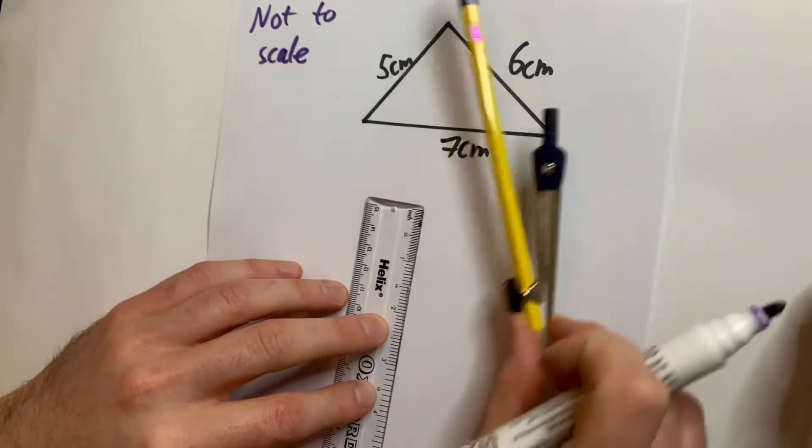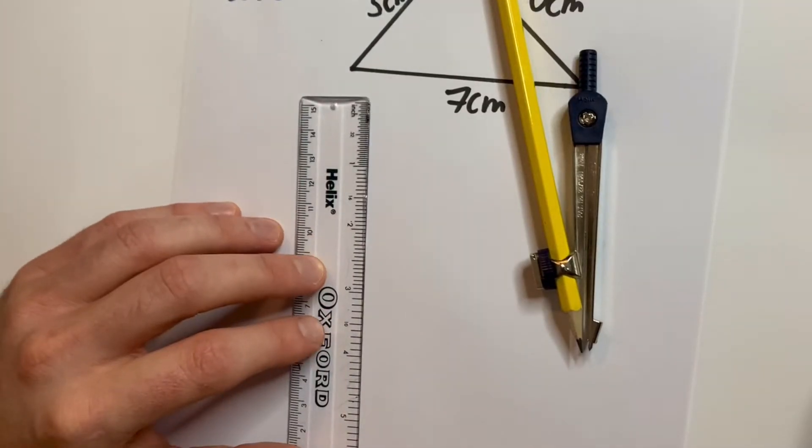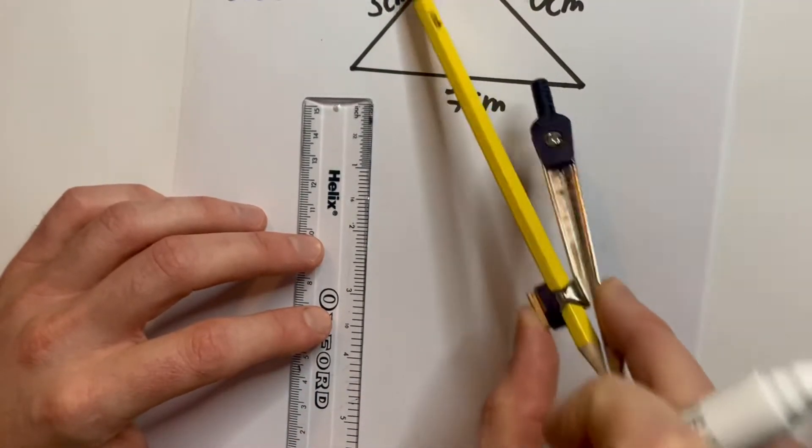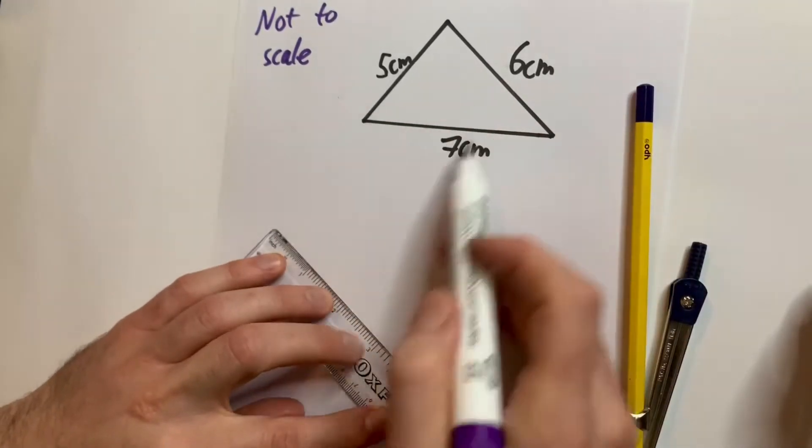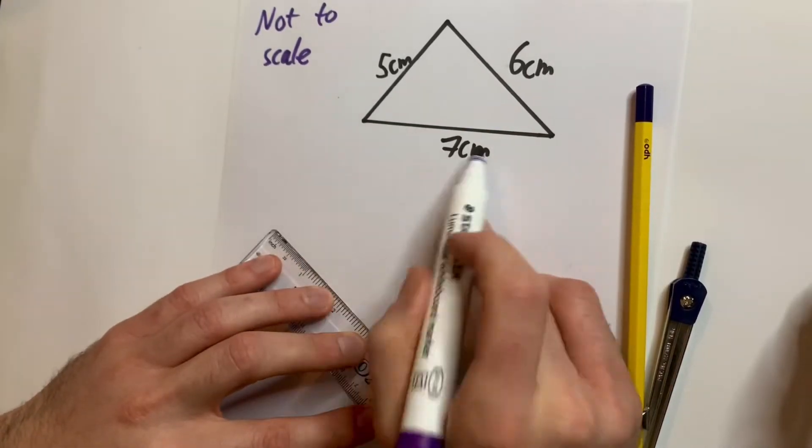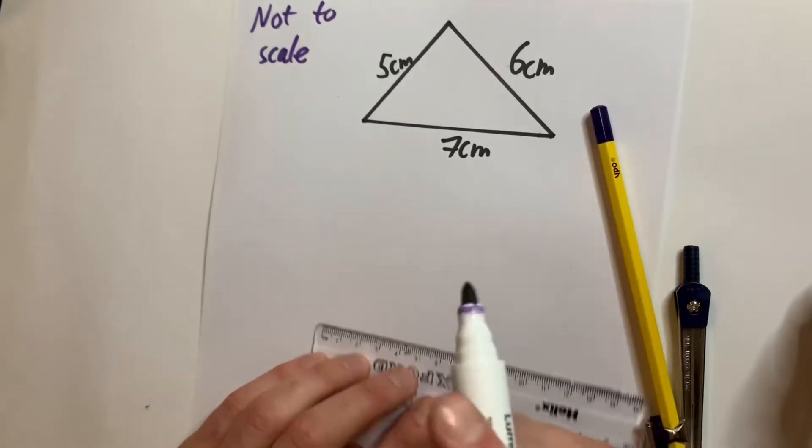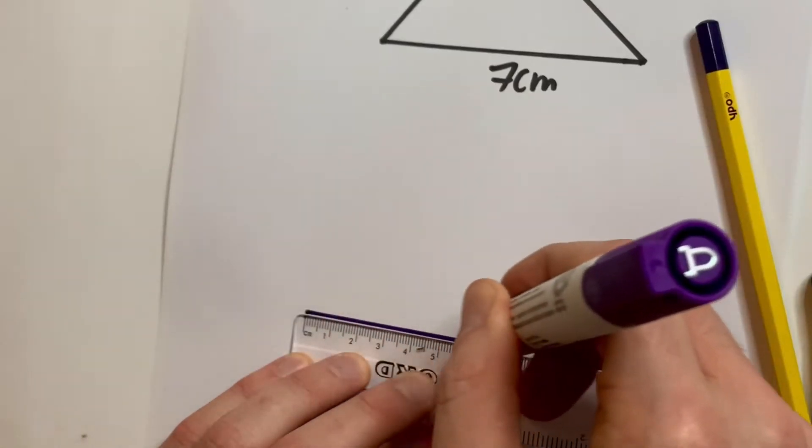We're going to use a compass and a ruler. Really important, we need this compass to make sure it's accurate. So this one here is not drawn to scale, seven centimeters. We need our ruler, nice and easy to draw our seven centimeter line.